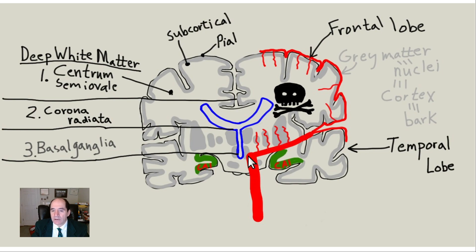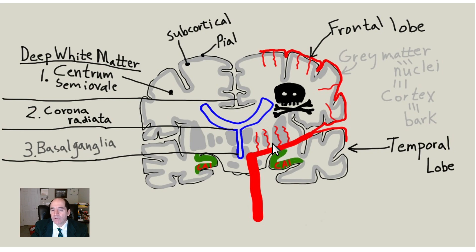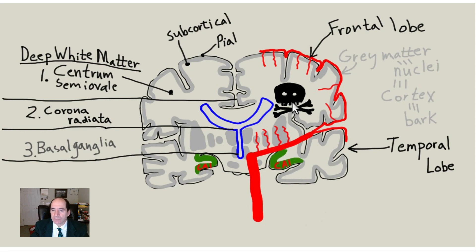Hypertensive patients often get shearing injury at the base of the lenticulostriate arteries, causing strokes in the basal ganglia — lacunar infarcts, meaning holes in the brain. I see those every day. The corona radiata and centrum semiovale are also high-stroke areas — skull and crossbones regions — due to atherosclerosis from hypertension and diabetes, or from overtreated hypertension with insufficient blood flow due to poor collateralization.